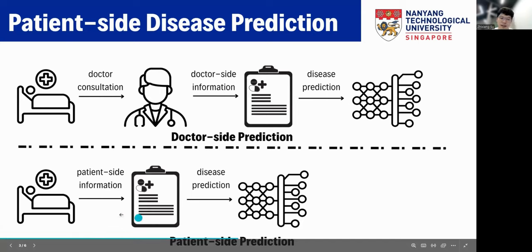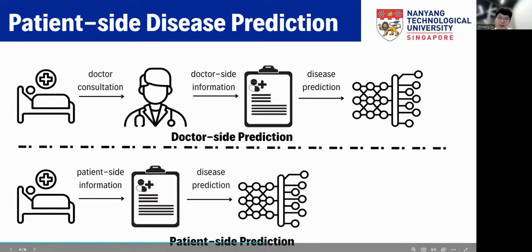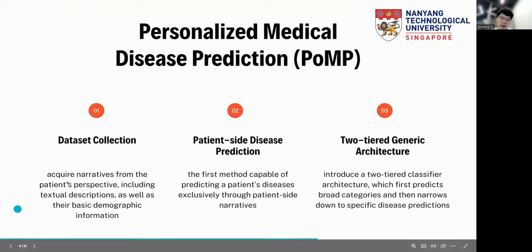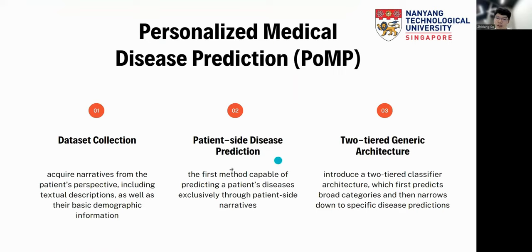We collect the patient-side information and then directly apply our model to make predictions. Our model is called Personalized Medical Disease Prediction. Firstly, we do dataset collection — we collect personal patient-side information, including textual descriptions as well as basic demographic information. We then do patient-side data prediction using an NLP model combined with other deep learning models to encode the basic information.